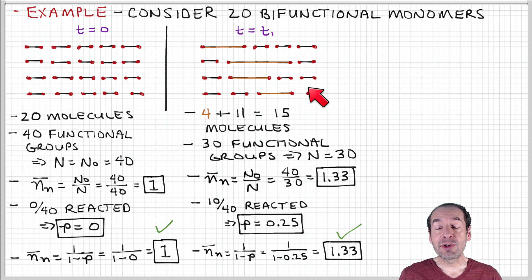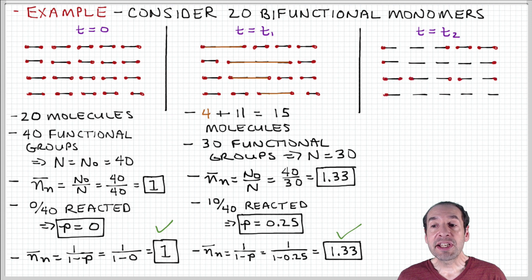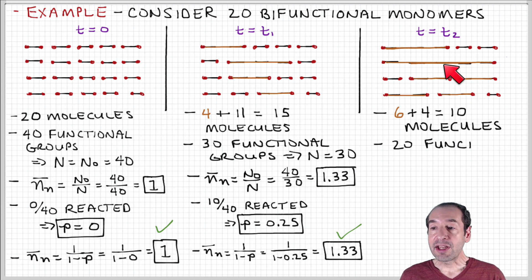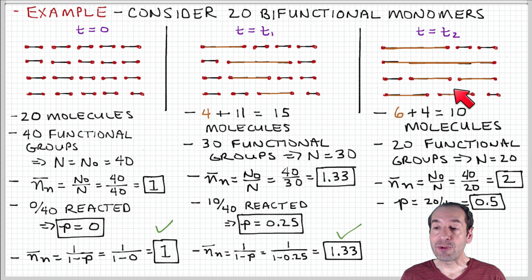So again, these accounting methods that we're using to characterize the process are giving us a consistent result. Let's go to one more later time. Let's imagine that the reaction has progressed some more. This middle chain has grown to be the whole length of this array. The top one has grown, and then a few more smaller ones have formed.